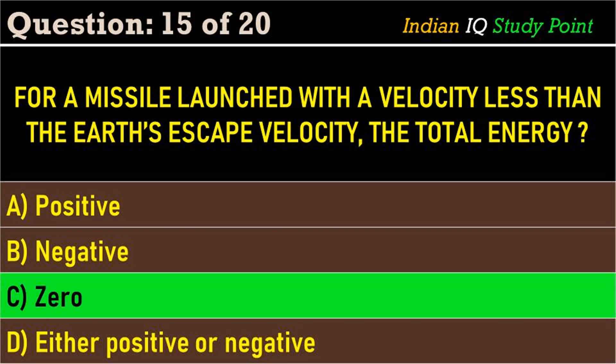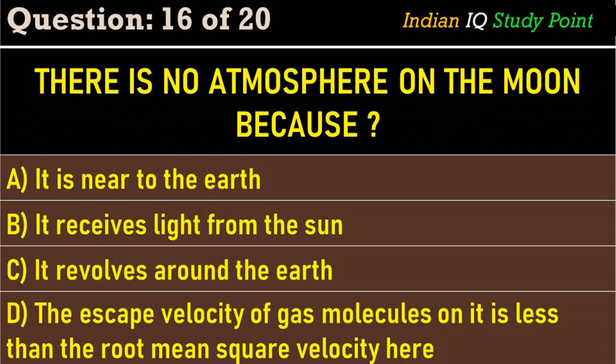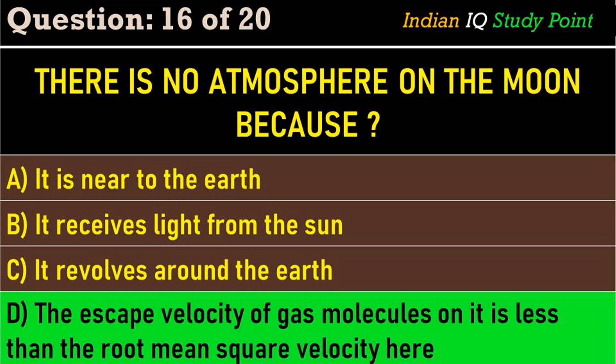Coming to the next question: there is no atmosphere on the moon because — option A: it is near to the earth. Option B: it receives light from the sun. Option C: it revolves around the earth. Option D: the escape velocity of gas molecules on it is less than the root mean square velocity. The correct answer is option D: the escape velocity of gas molecules on it is less than the root mean square velocity.